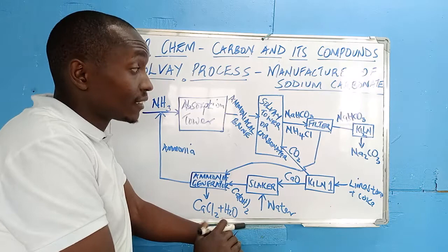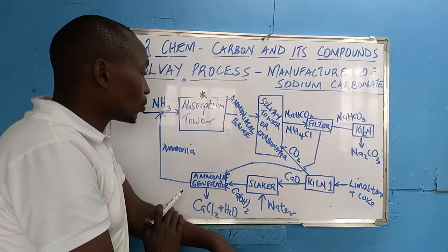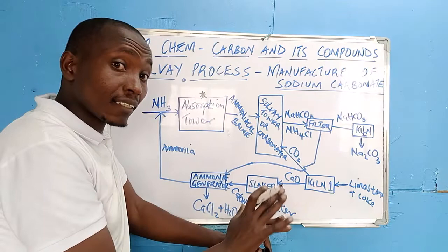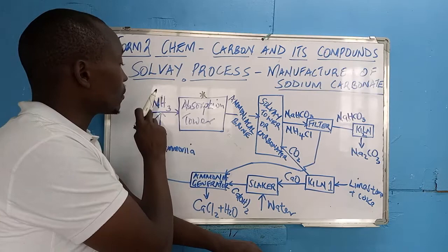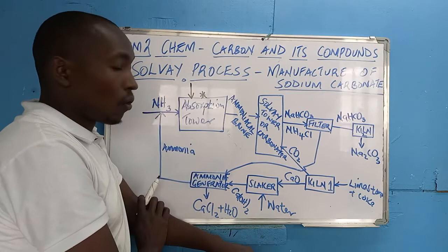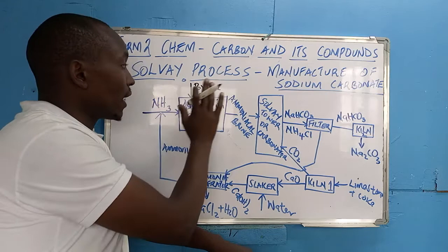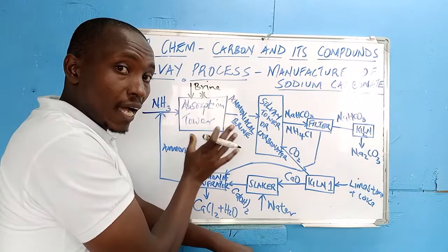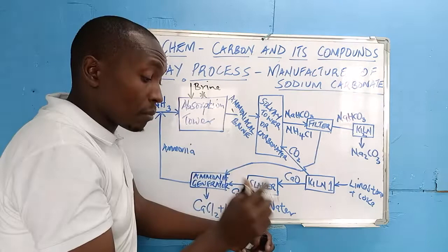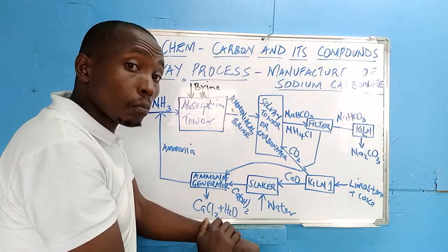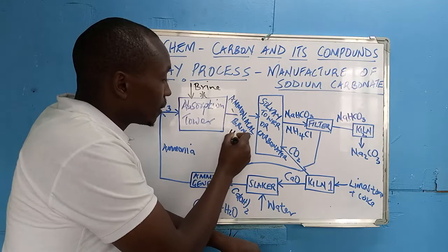Starting with the absorption tower: any time you hear of an absorption tower, there must be a gas dissolving in a liquid or solution. In this case, ammonia gas is dissolved or absorbed in brine. This is where ammonia and brine mix. What comes out is not a compound but a mixture called ammoniacal brine.